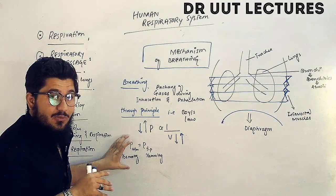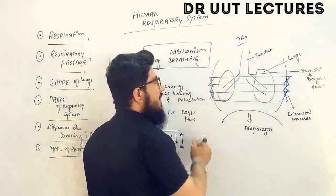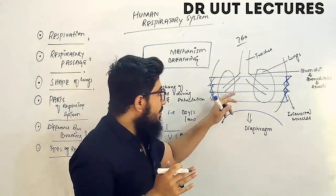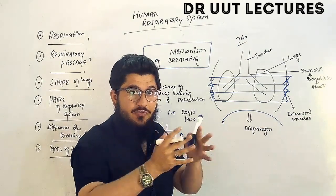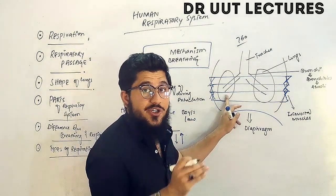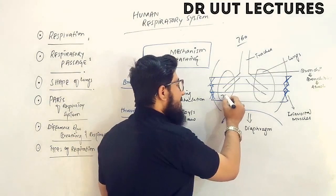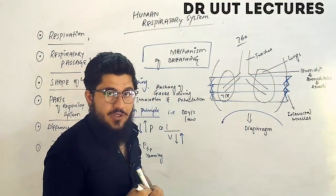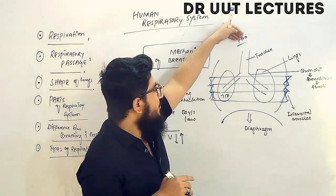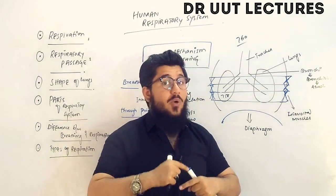When the intrapleural pressure decreases, gases move from the high-pressure region to the low-pressure region. Outside we have 760 mmHg, but due to contraction of the intercostal muscles and diaphragm, the lung volume increased and the intrapleural pressure dropped from 760 to 758 mmHg. Since outside pressure is higher, gases — specifically oxygen — move from outside into the body during inhalation.